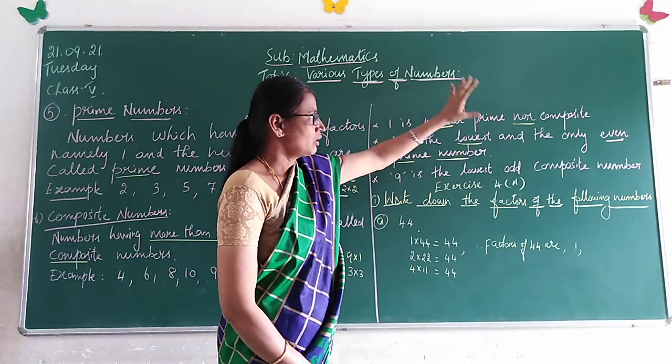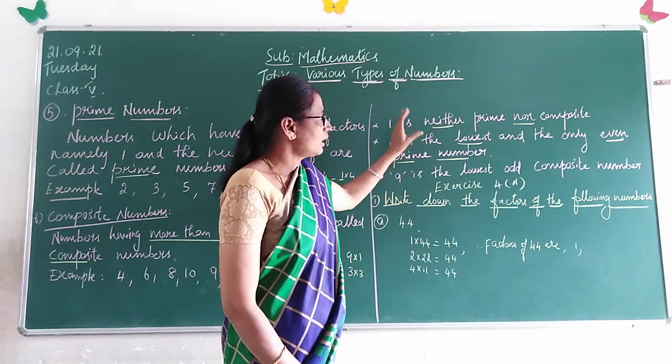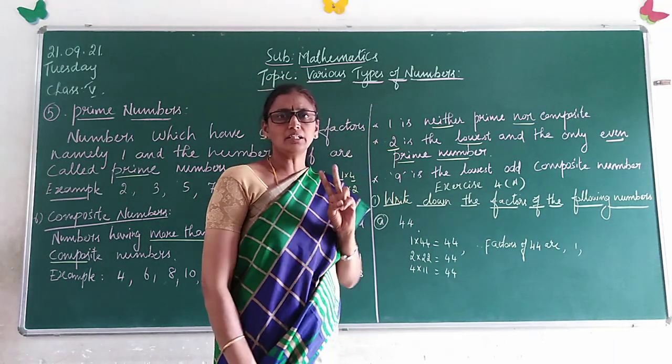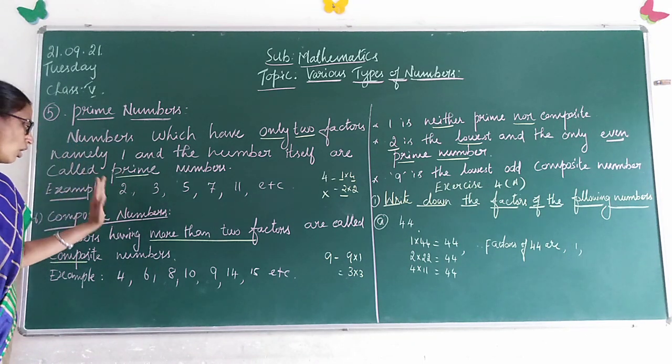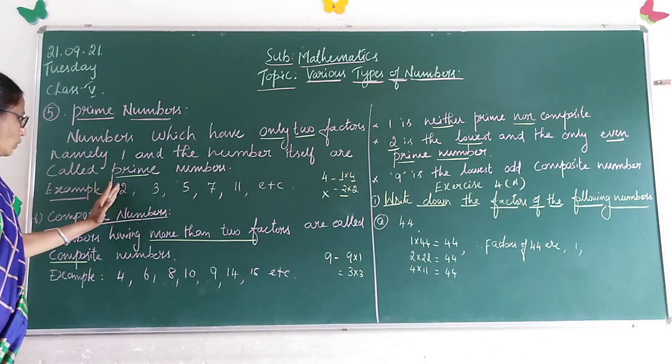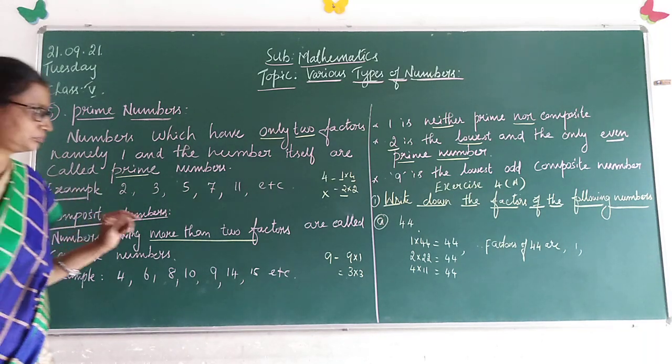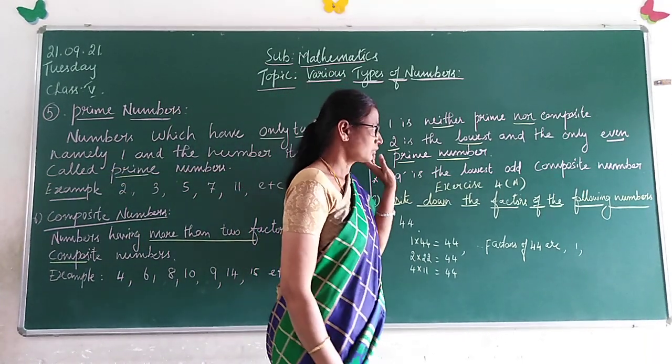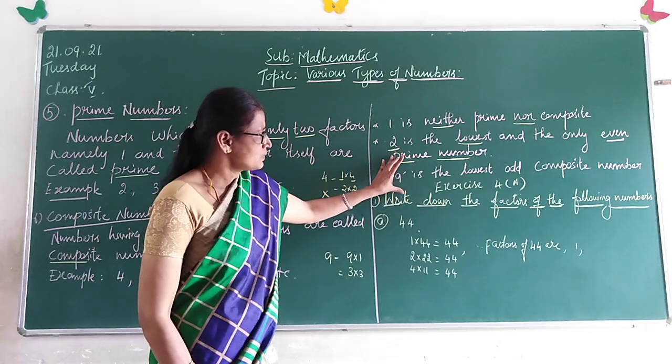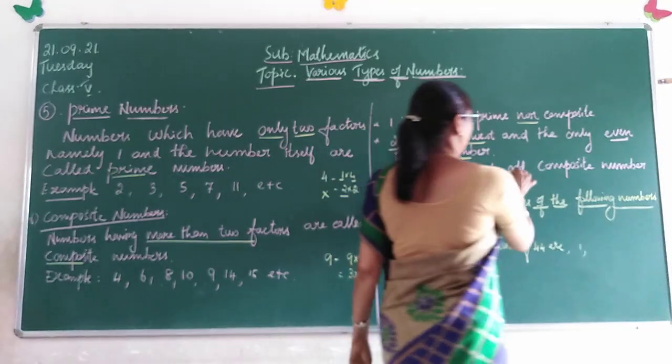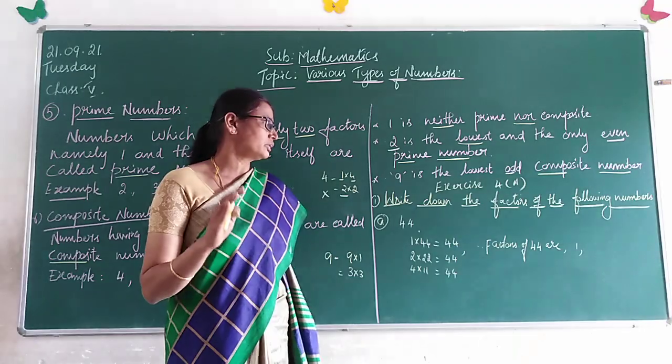1 is neither prime nor composite. The number 2 is the only even prime number. 4 is the lowest composite number.